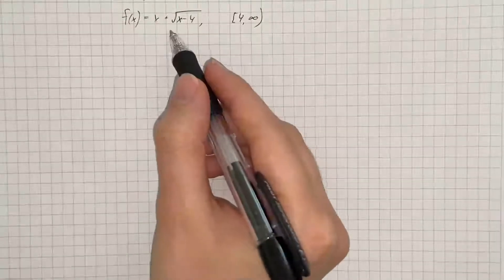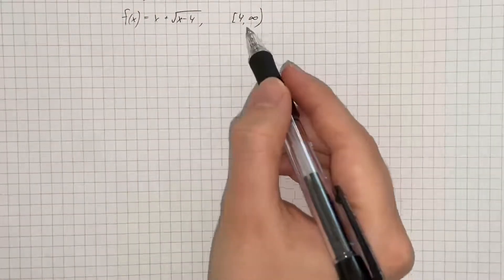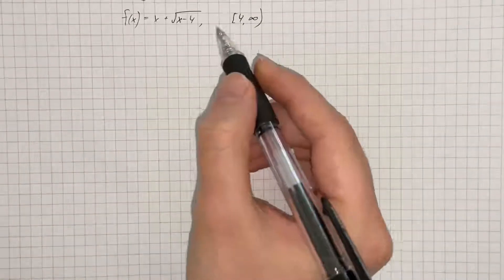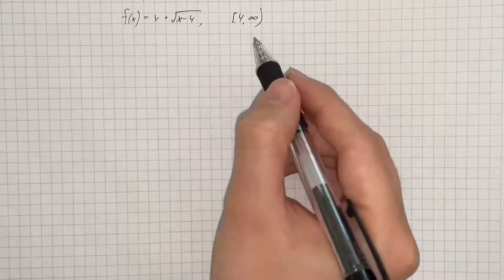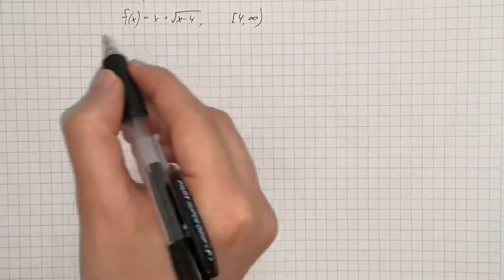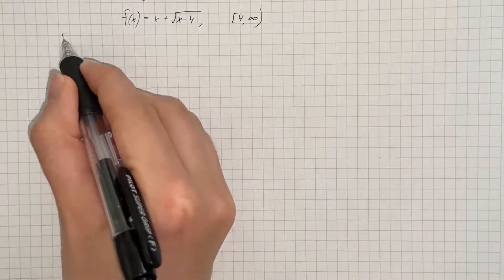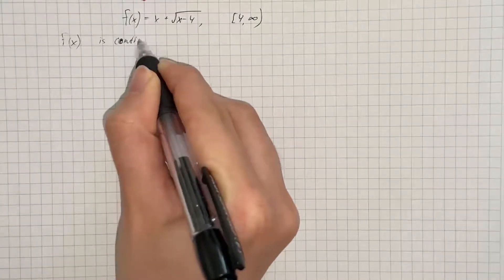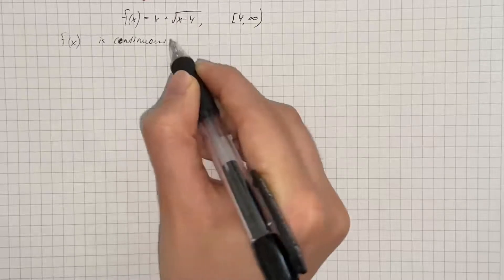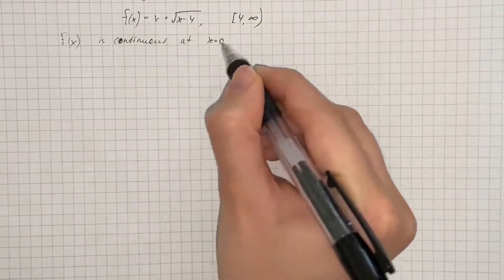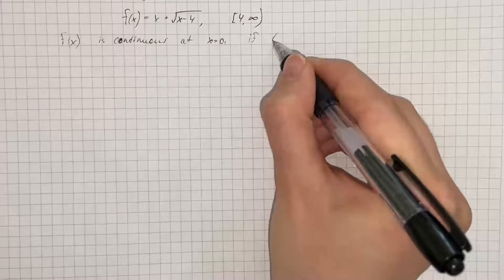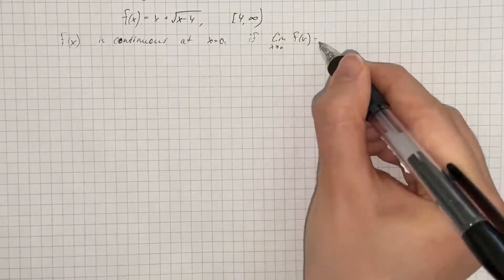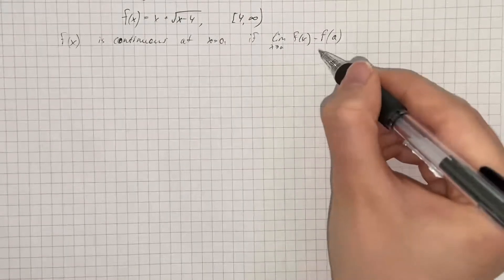We have to find whether the given function is continuous on the given interval. A function is continuous on an interval if it is continuous at every point of the interval. f(x) is continuous at x = a if the limit as x approaches a of f(x) equals the value of the function at that point.